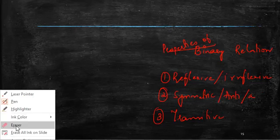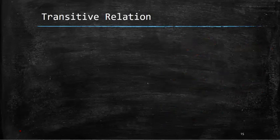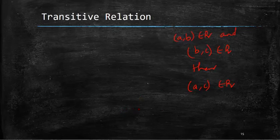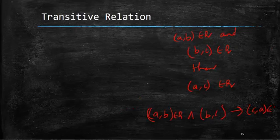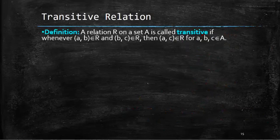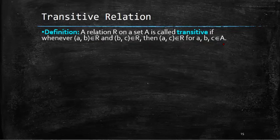So let's see what it means by a transitive relation. A relation R on set A is called transitive whenever (A, B) belongs to R and (B, C) belongs to R, then (A, C) should also belong to R. It can be represented using this notation: (A, B) belongs to R and (B, C) belongs to R implies (A, C) should also belong to R. So this is what it means by transitive relation, for all elements A, B, C belonging to the set A.